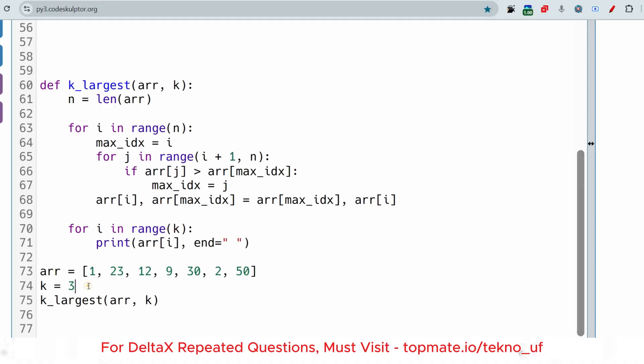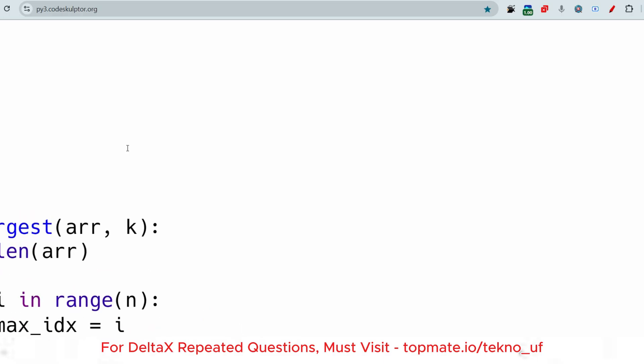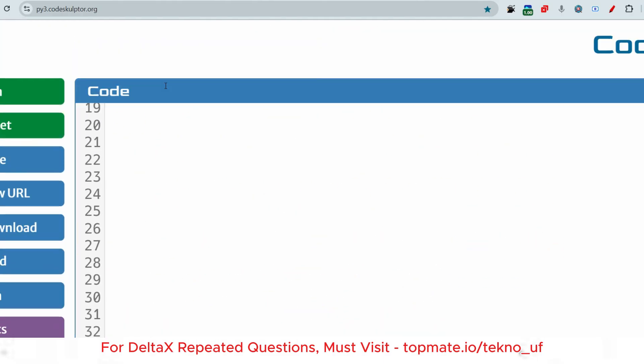But the medium and last questions will be a little bit moderate or hard level. As you can see, I changed the value K equals 2, and it should be 50 and 30, as expected.